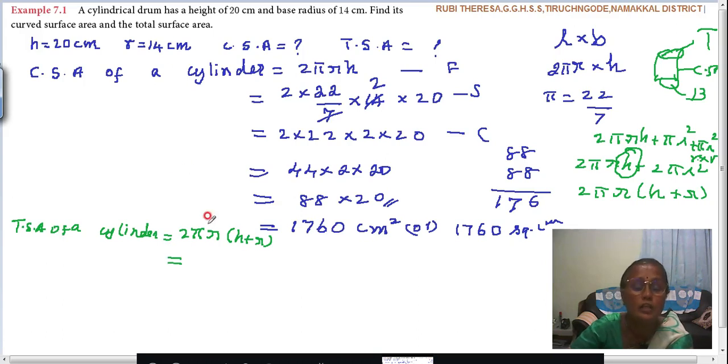So 2πr into (h + r). Same way, because 14 is there, 2 into 22/7 into what is r? 14 into what is h? 20. So 20 plus what is r again? 14. Formula, substitution, next calculation. Understand?